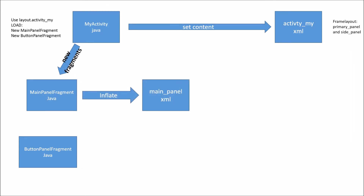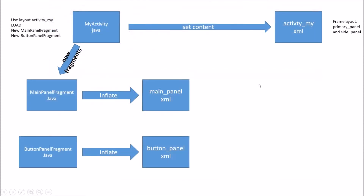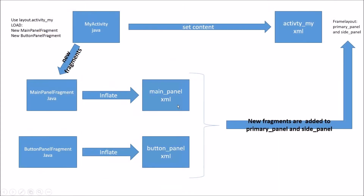We're also going to inflate the main panel — it's basically just an image view in a linear layout, that's all it is. Then the button panel fragment is going to inflate the button panel XML, which is those three buttons on a green background. All of this goes into the primary panel and side panels that we looked at earlier in activity_my.xml.